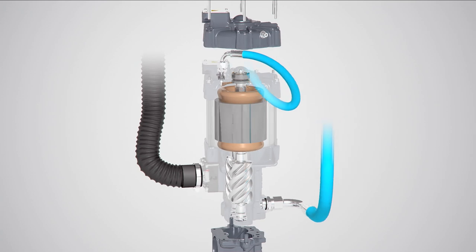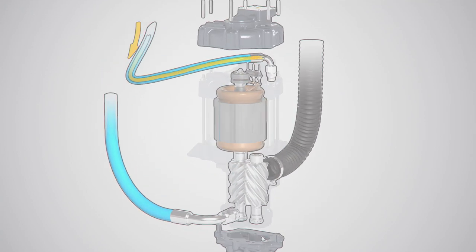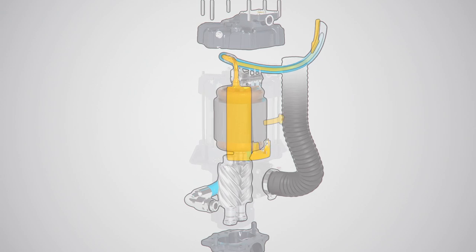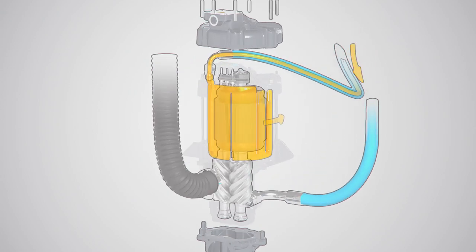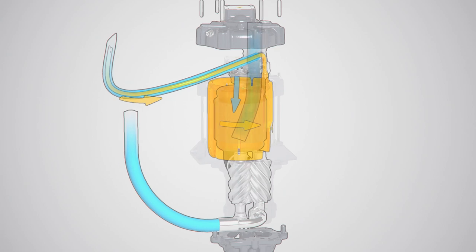Oil lubricates and cools the motor, its bearing and the compression element. Oil is injected in the motor housing and runs through canals around the motor, cooling the motor evenly.